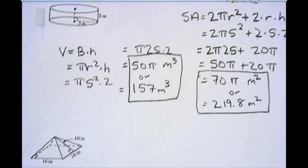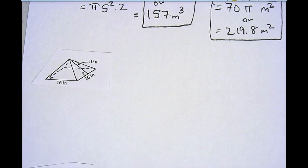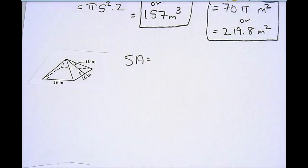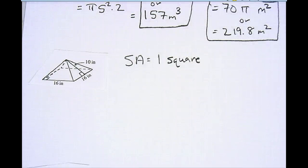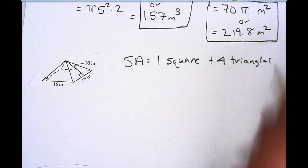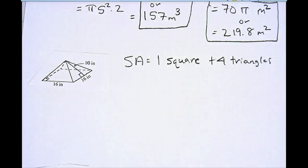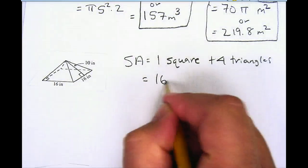Next we're going to look at finding the surface area of a pyramid. The surface area is how many squares it's going to take to cover up my whole pyramid. What is that pyramid made up of? Well, on the bottom it's a square, so I have one square. And then up from each edge of the square, I have a triangle that meets in the top middle, so I have plus four triangles. The area of the square is just going to be 16 times 16, because it's a 16 by 16 square.